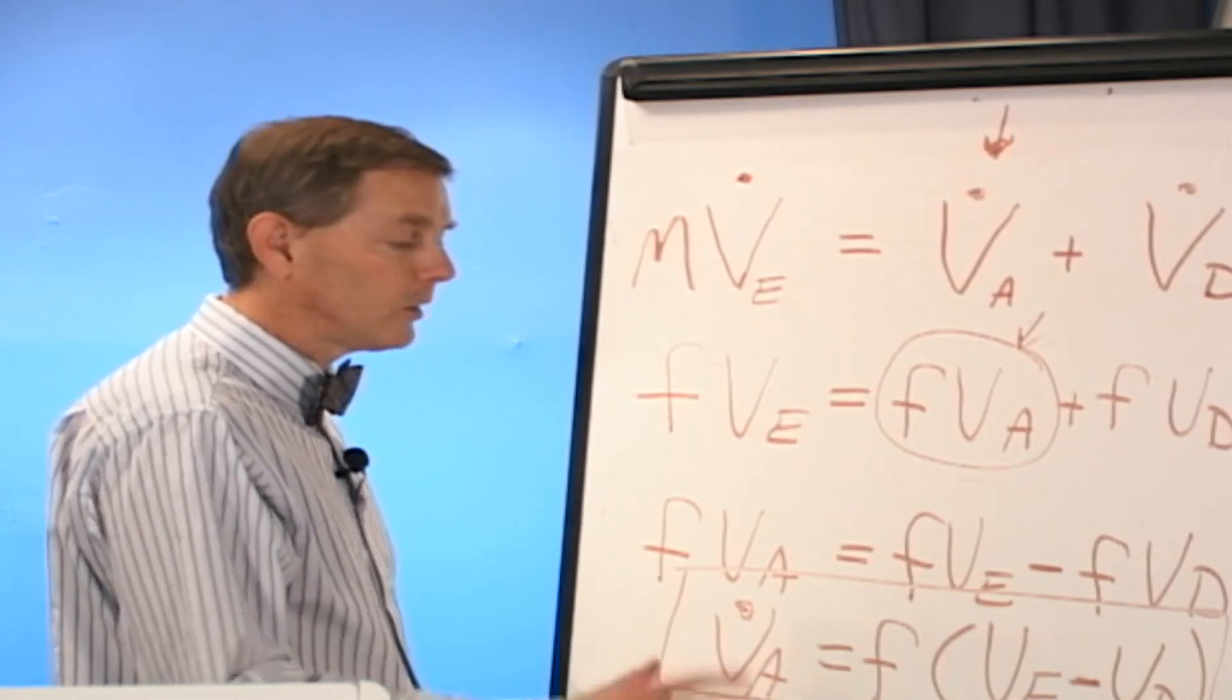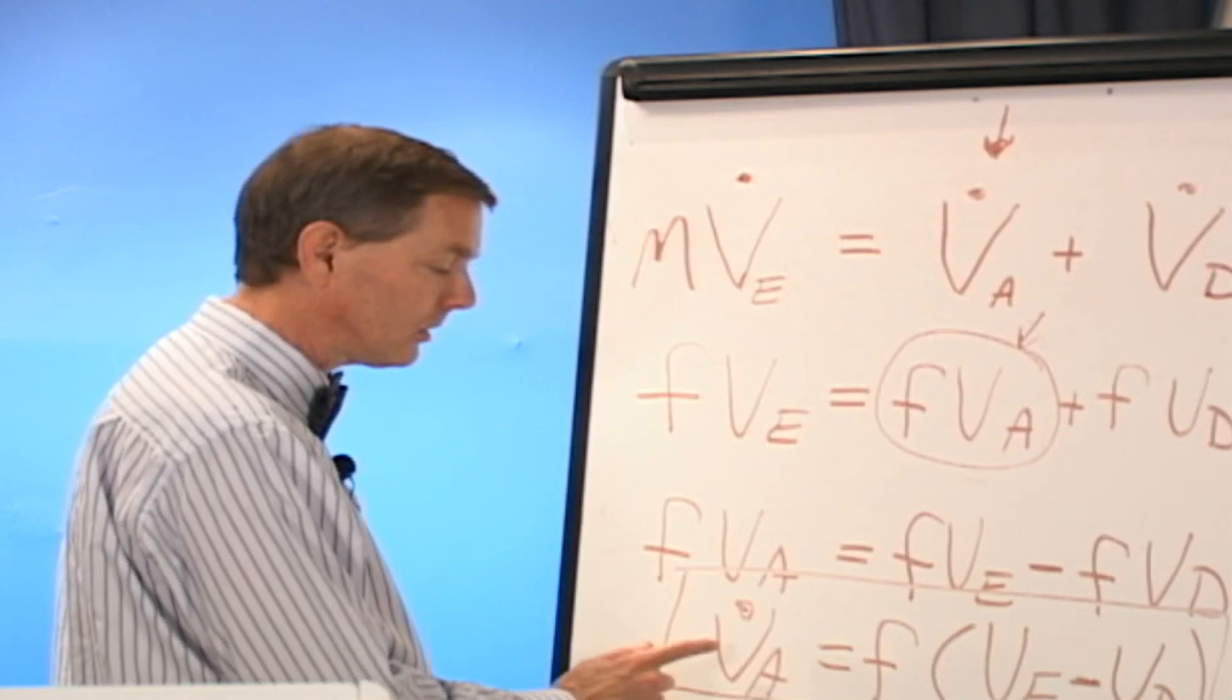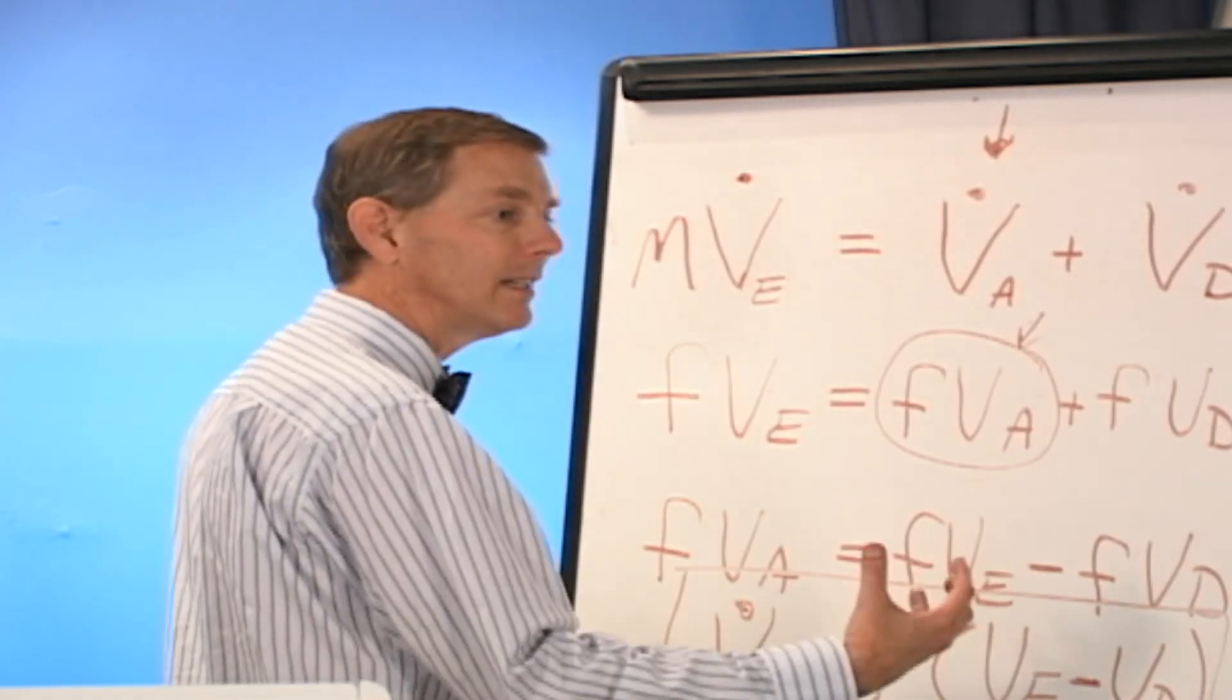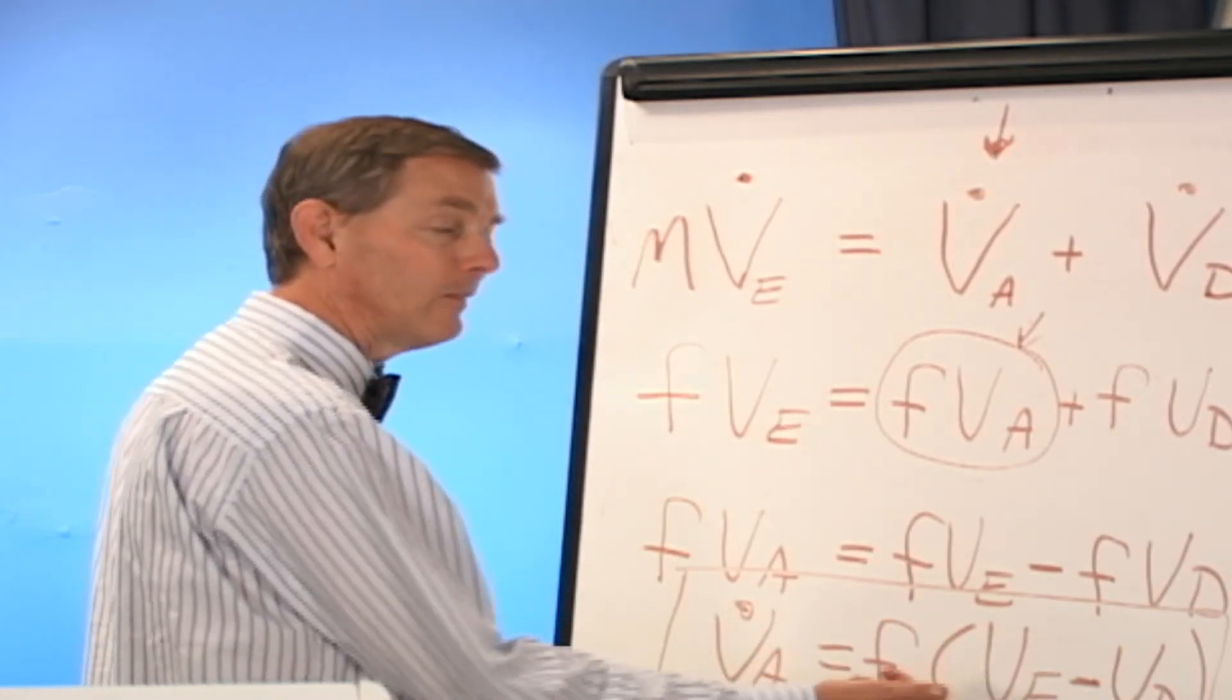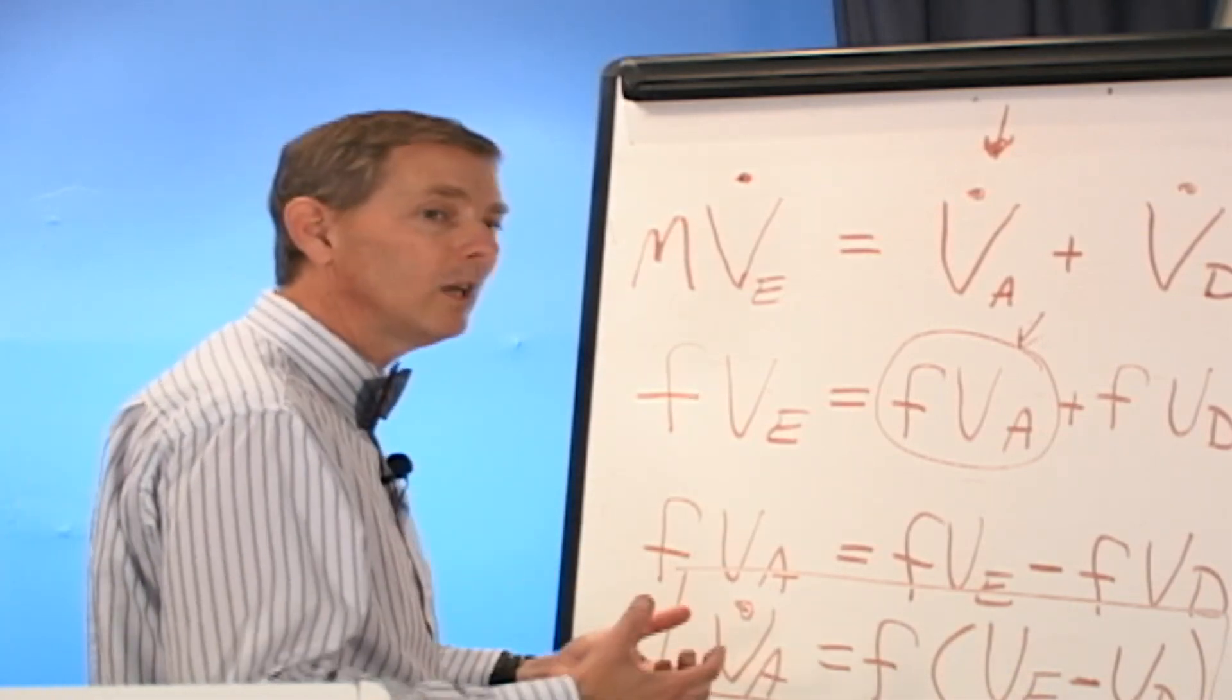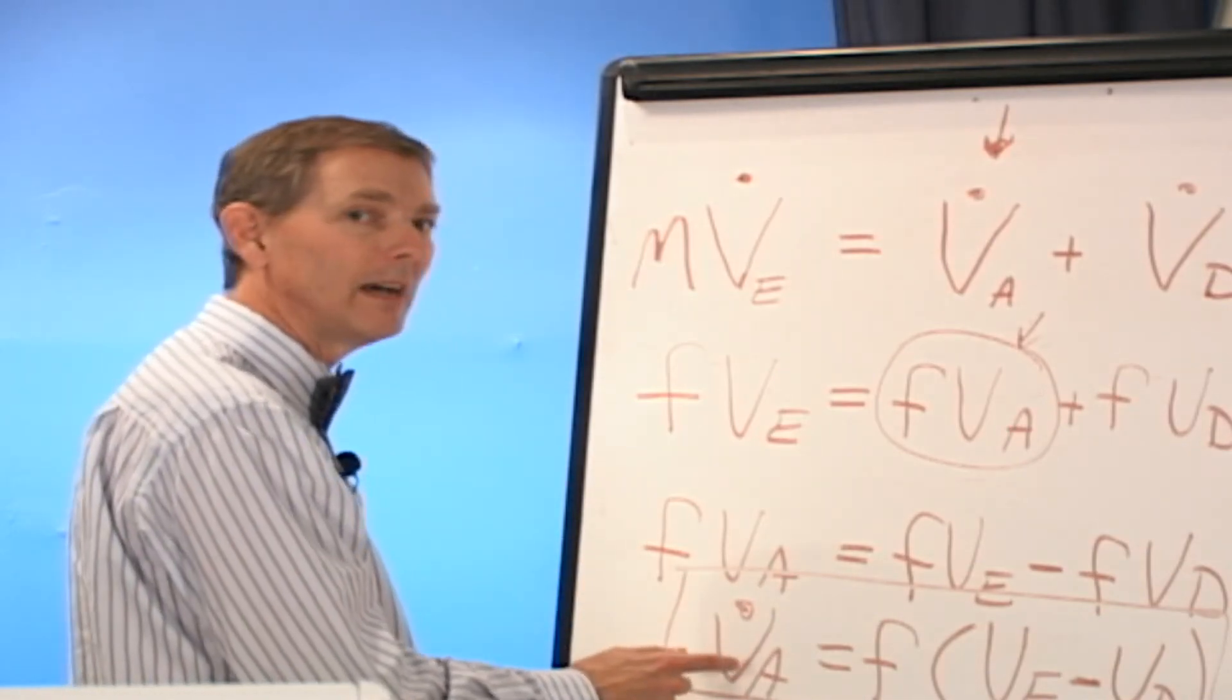I can also alter my breathing rate. So the two things that we can alter physiologically to alter alveolar ventilation, which is going to be the business end when we get to gas exchange physiology, is to alter our breathing rate and the depth of the breath that we take. And that's common sense. If I want to move more air into my blood, I want to move more air into my alveolar.